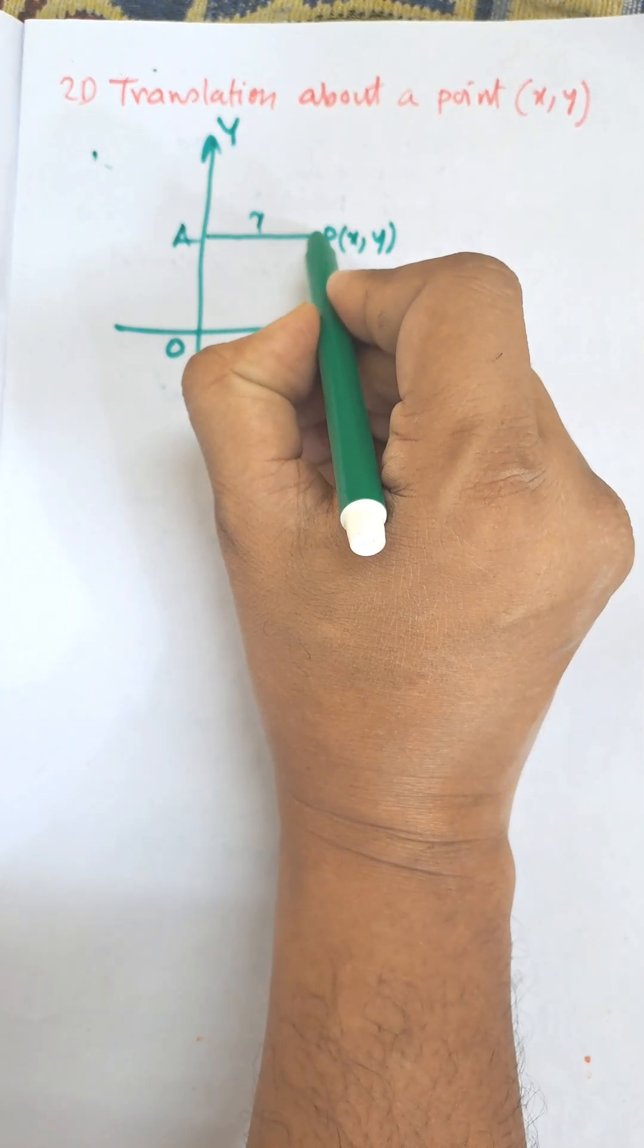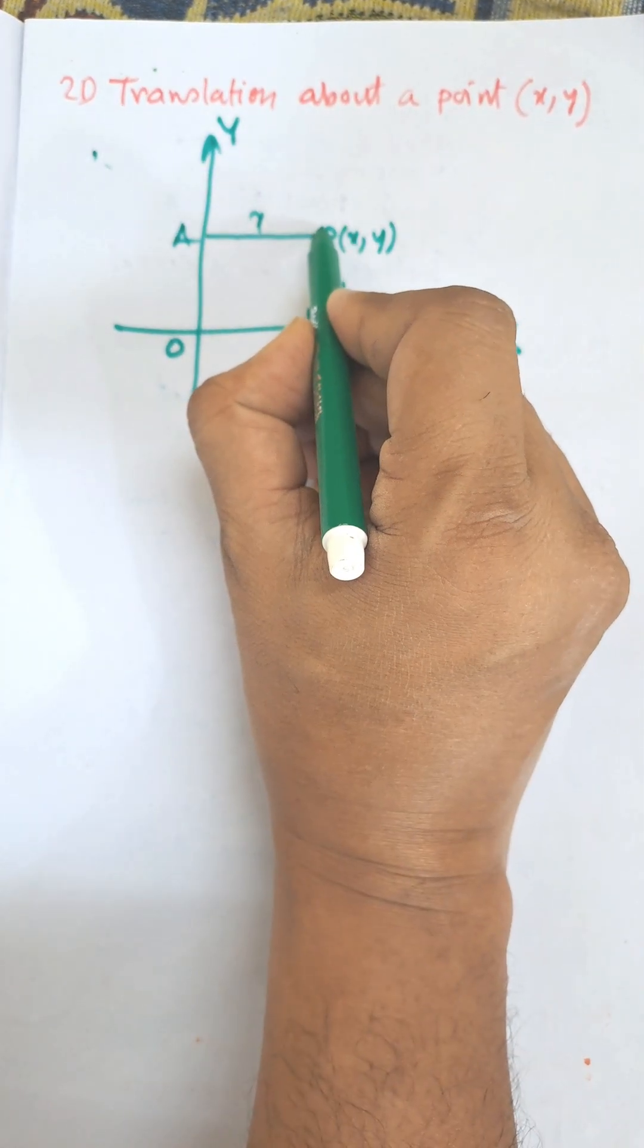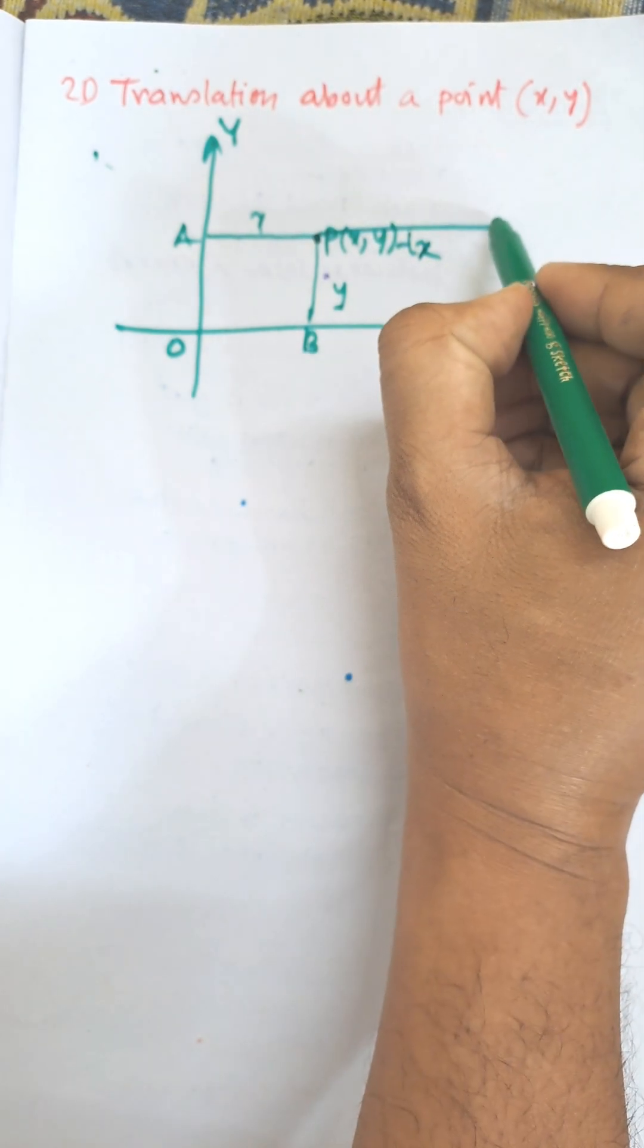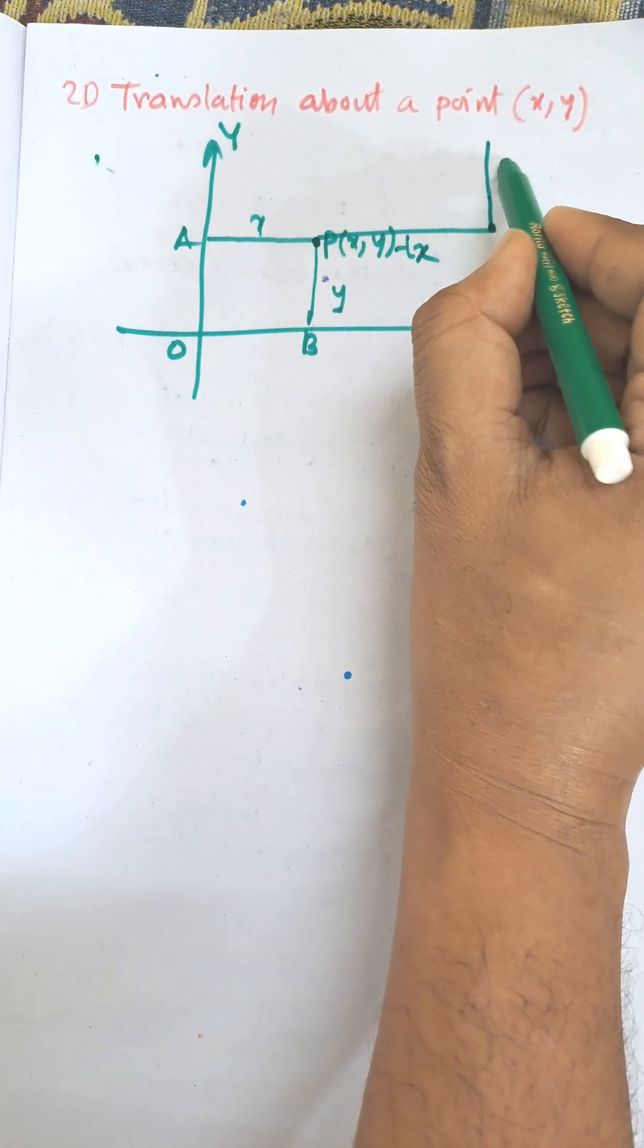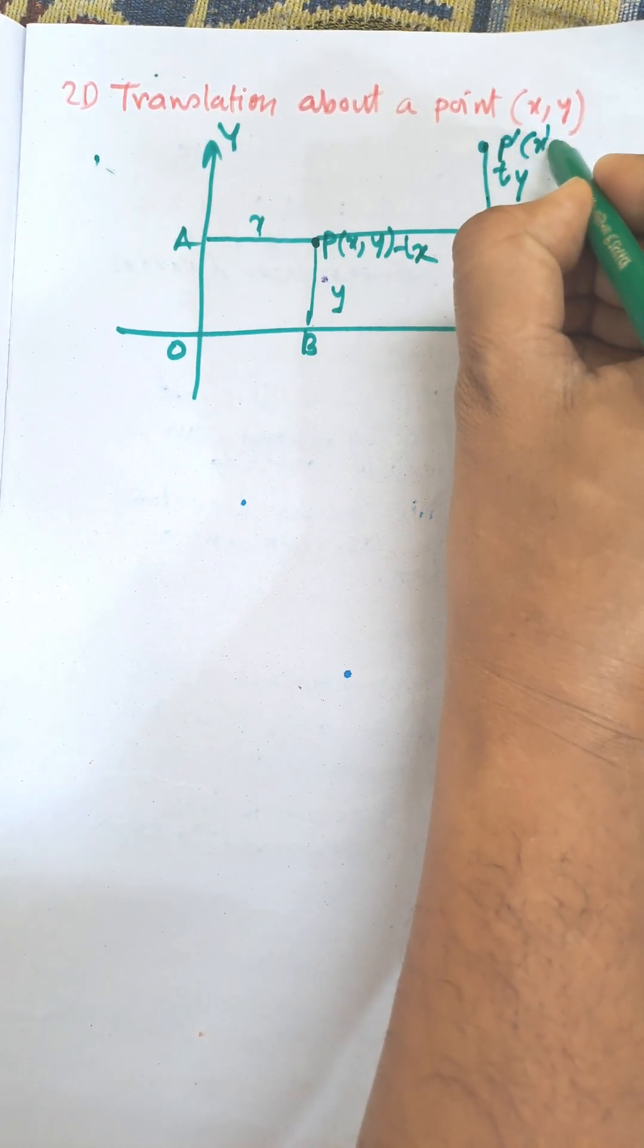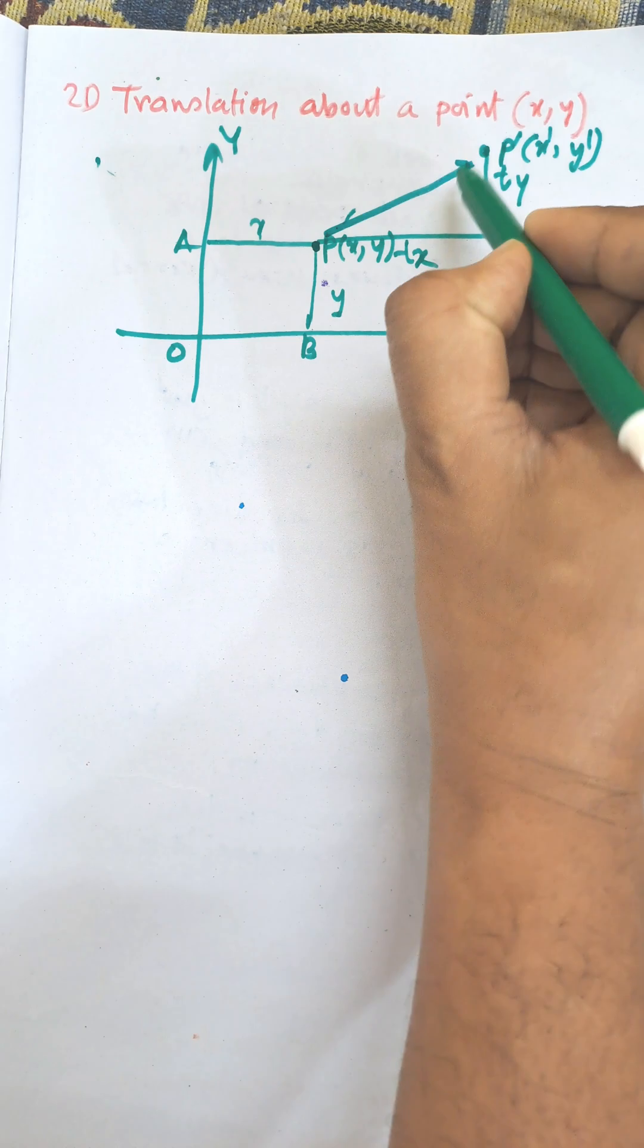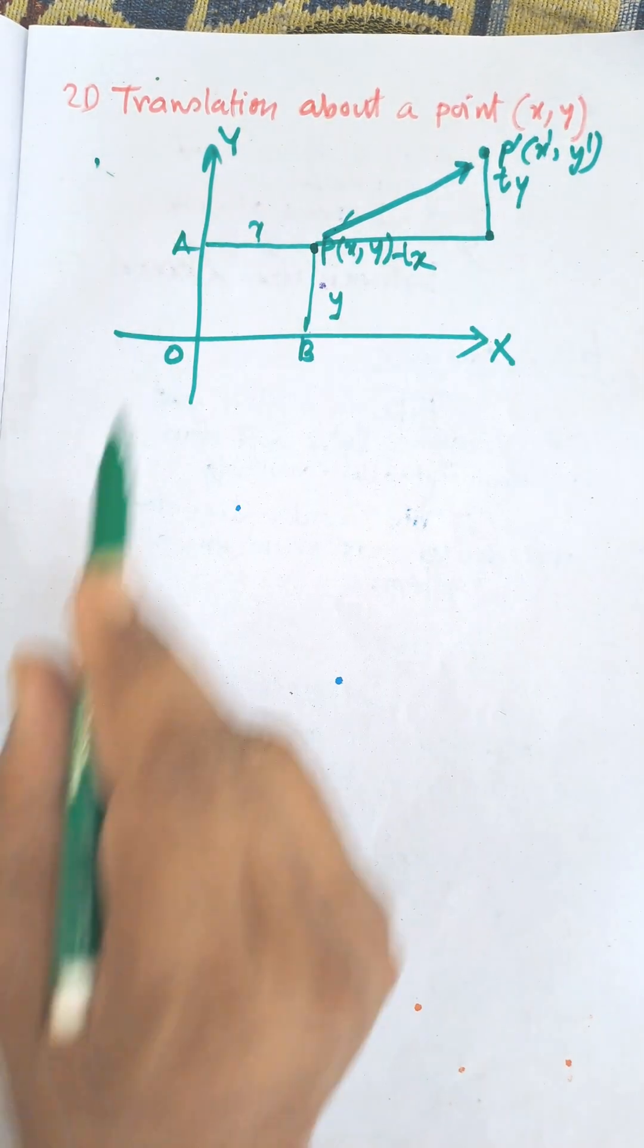So initially the point is P(x,y). Now P is translated along the x-axis by tx and along the y-axis by ty, and the new point is P' (x',y'). We need to find the translation matrix for point (x,y).